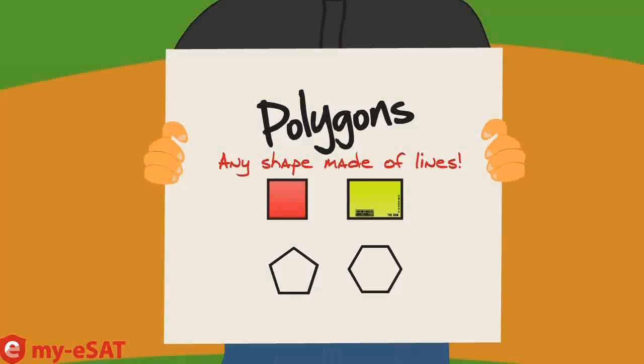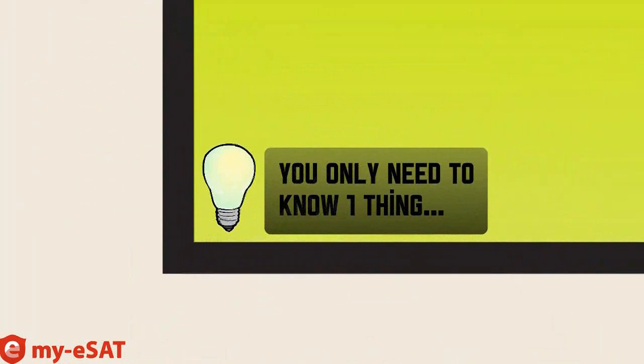Polygons are named according to the number of sides they have. You pretty much only need to know one thing about polygons, and that's how to find the sum of their interior angles.